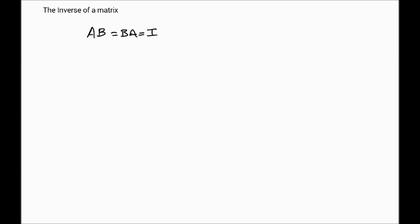We then say that A is invertible — also called non-singular — as opposed to being singular. If this inverse matrix B does not exist, then we say that A is in fact singular.